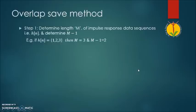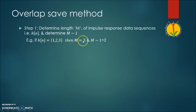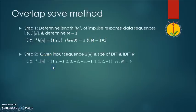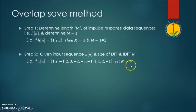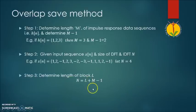Let us see one simple example to determine the overlap save method to filter a long data sequence. Suppose the impulse response h(n) = {1, 2, 3}, which indicates it has 3 samples, so its length M = 3, and M-1 = 2. Now for the input data sequence, for the overlap save method, let us consider the size of the DFT/IDFT as N = 4. Now let us determine the length of the block using the equation, from which we calculate L = 2.